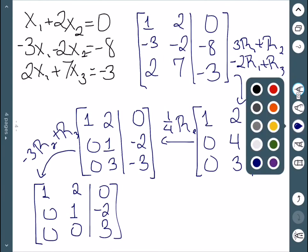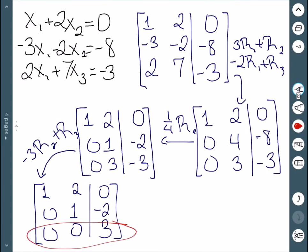And we can see this last row here does have a 0 equal to 3. So that means this has no solution.